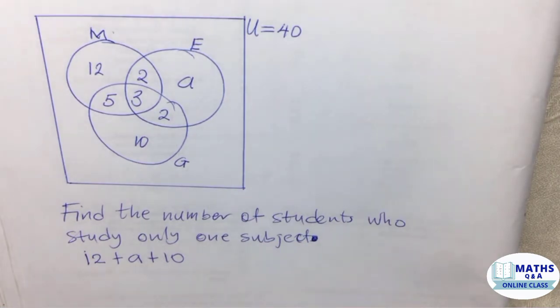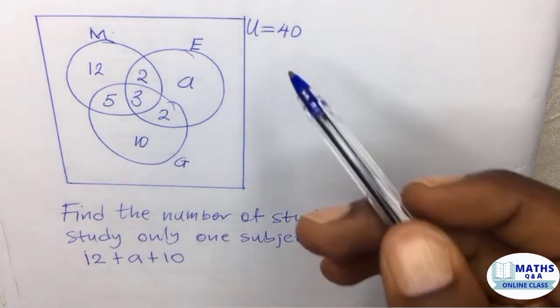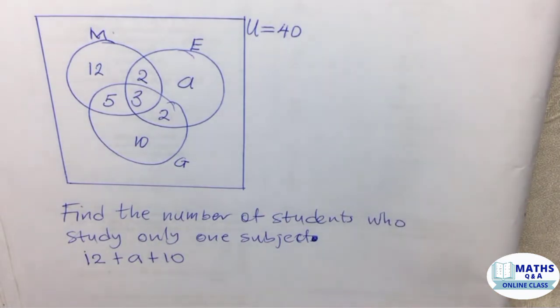The first thing we need to do is find a. How do we do that? We have to sum individual regions in the Venn diagram and equate it to the universal set, which is 40. So let's go ahead and do that.